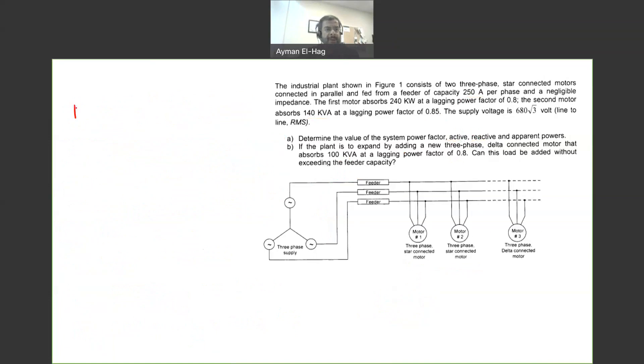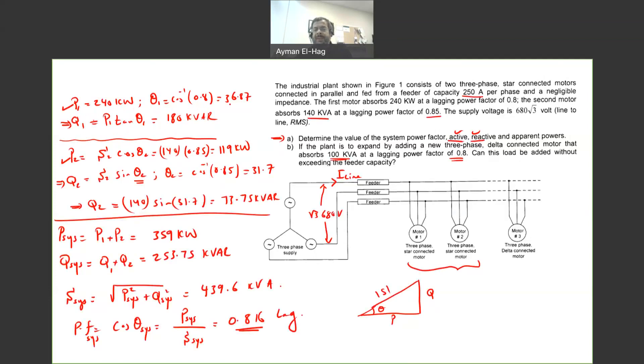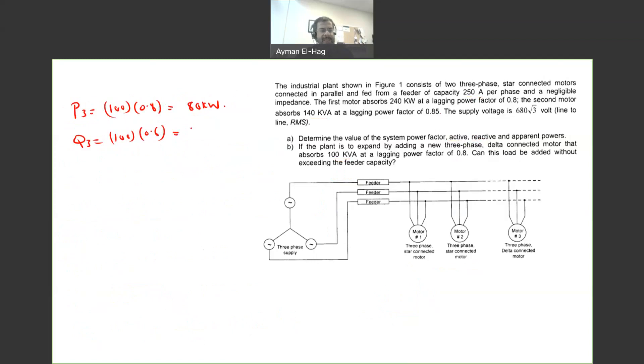So now we understand what is required. Then we need to find P3 and Q3, which is from this load. So my P3 is equal to 100 times 0.8, which is the power factor, which gives me 80 kilowatt. Now my Q3 will equal to 100 times 0.6, which is the sine of the same theta that we already found here, the sine of 36.87. So it's 0.6, and this gives me 60 kVAR.